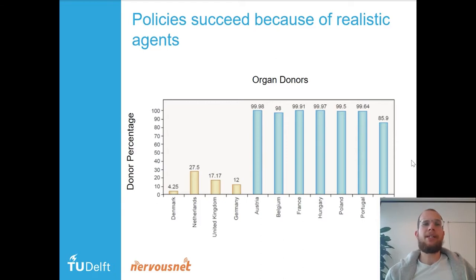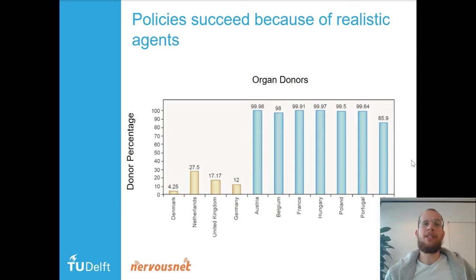The point here is that humans apparently usually go for the default option. If our goal is to have as many organ donors as possible, it might be wise to know this, because we can adapt our policy to account for this fact about human behaviour. In summary, policies succeed because we have a realistic idea of humans — because we have realistic agents.